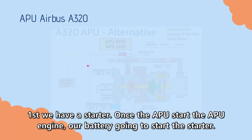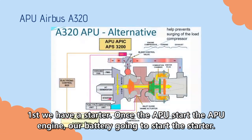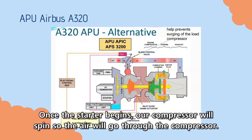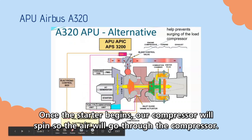First, we have a starter here. Once the APU starts the APU engine, our battery is going to start the starter with the battery. Once the starter begins, our compressor will spin, so the air will go through the compressor from the outside.